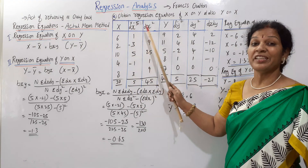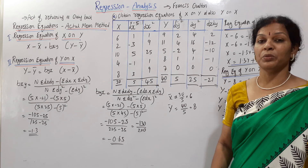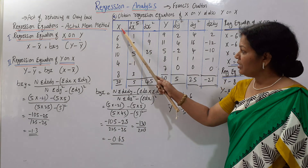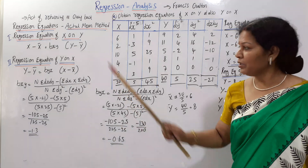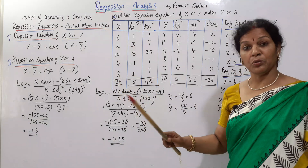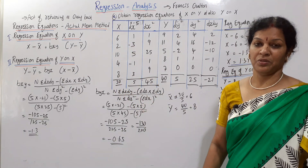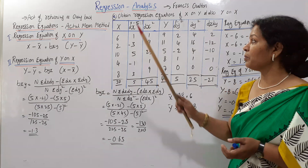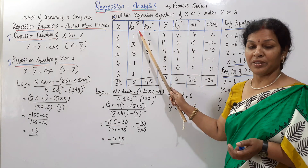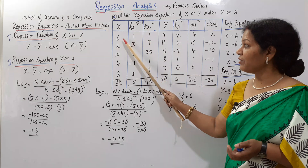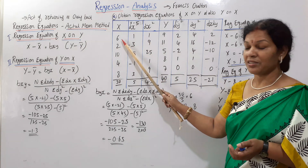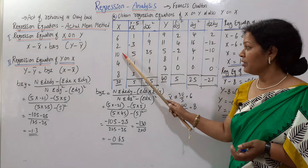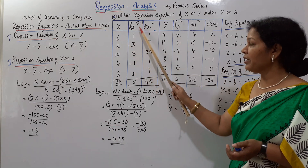Here dx is defined as x minus a, where a is the assumed mean. If we assume a equals 5 for x, then dx = x minus 5. For example: 6 minus 5 equals 1, 2 minus 5 equals minus 3, 10 minus 5 equals 5. So we compute dx for each value.